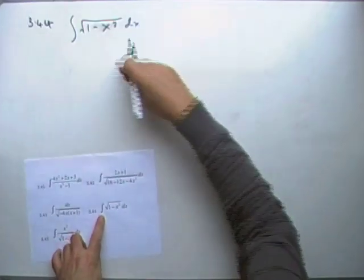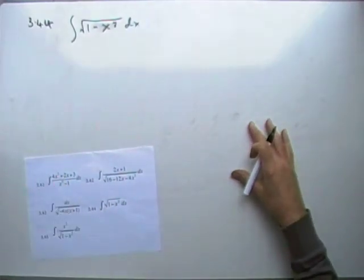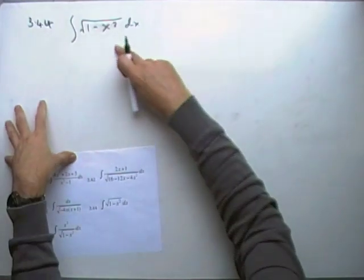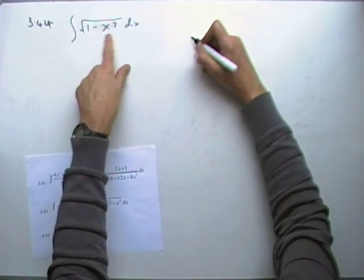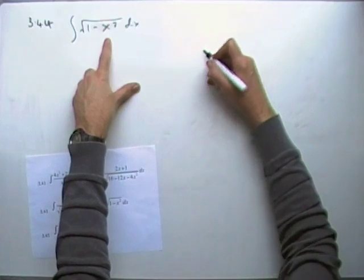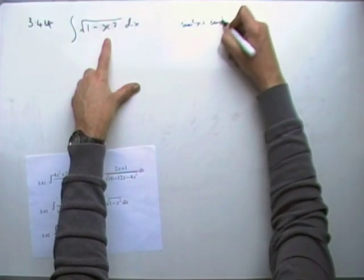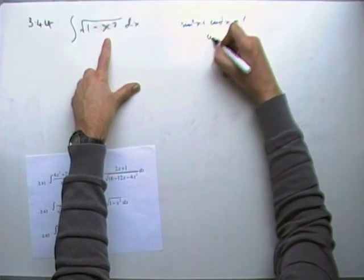So for this one, looks very much like an inverse sine, but it's not in the denominator. The thing to do here is we're going to use the substitution, because whenever you see this pattern 1 - x²,